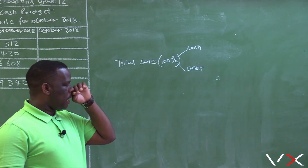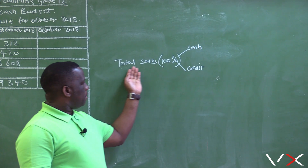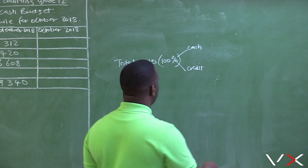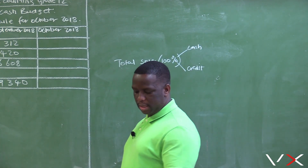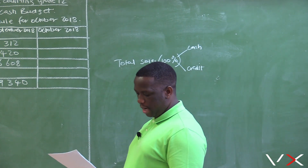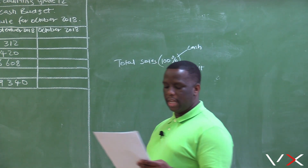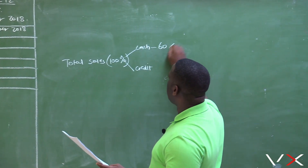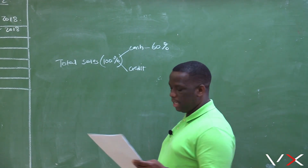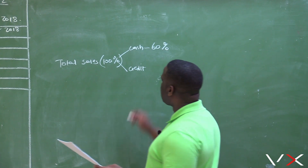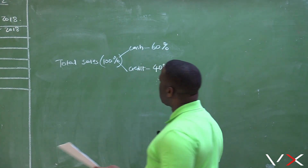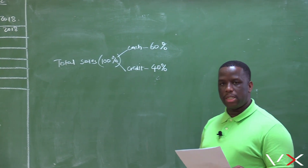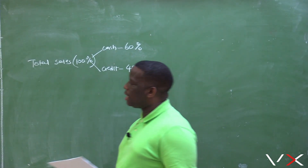Very few businesses only sell for cash. For most businesses, from the total sales you have your cash sales and your credit sales. In this activity, the information tells us that cash sales comprises 60 percent of total sales, which makes it clear that the remaining 40 percent is credit sales. Total sales is 100 percent; cash sales is 60 percent, therefore credit sales is 40 percent.